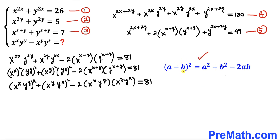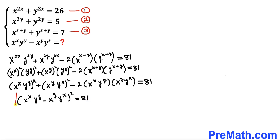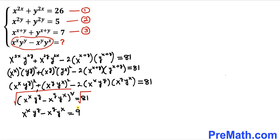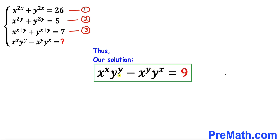Recalling the identity (a − b)² = a² + b² − 2ab and applying it to the left-hand side, we get: (x^x × y^y − x^y × y^x)² = 81. Taking the square root of both sides, the left-hand side becomes x^x × y^y − x^y × y^x = 9. Thus, the answer is positive 9.